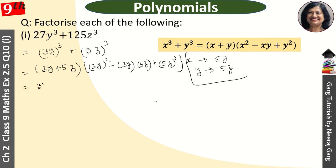The next step is 3y + 5z, and this is 3y². What will happen? 9y² minus 3y into 5z, so 15yz plus 25z². So these are the factors.